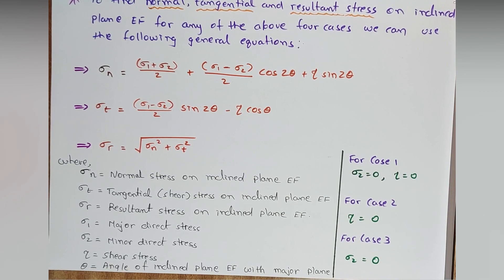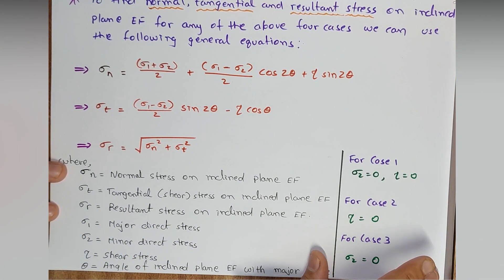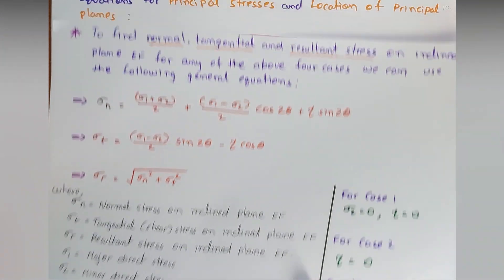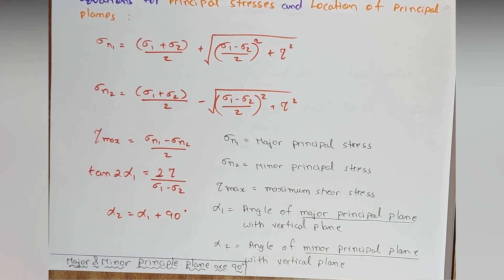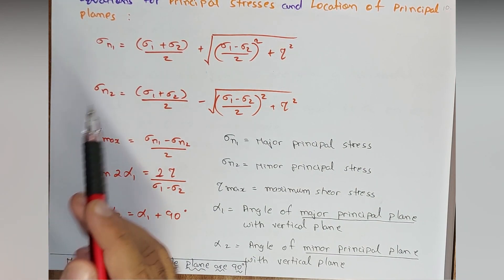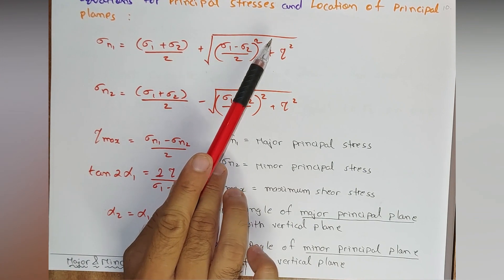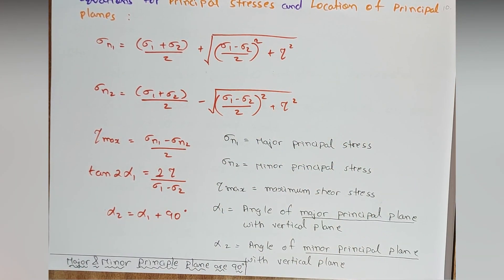So friends, this is all for Part 2, where we understood how to calculate normal, tangential, and resultant stresses on a principal plane inclined at any angle theta — the plane EF. In the next video we will look at the equations for principal stresses and the location of principal planes — how to calculate principal stresses and determine the location of the principal plane.